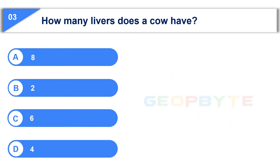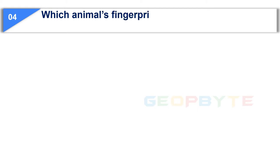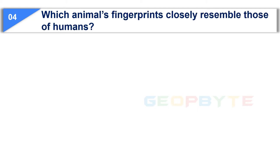Your time is up and the correct answer is Option D: Four. Moving to the fourth question: which animal's fingerprints closely resemble those of humans?